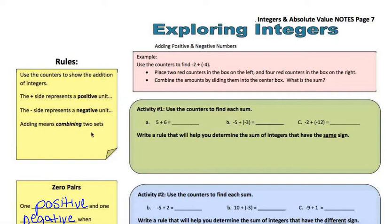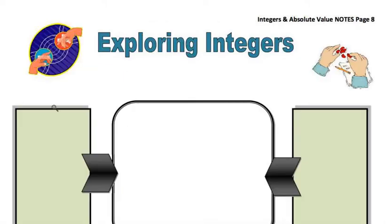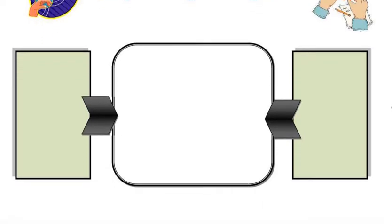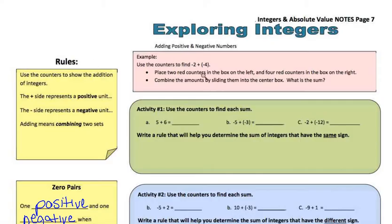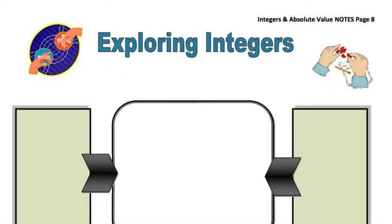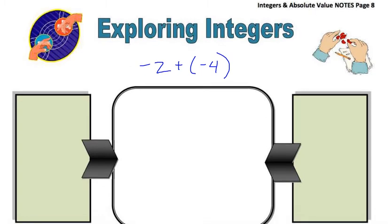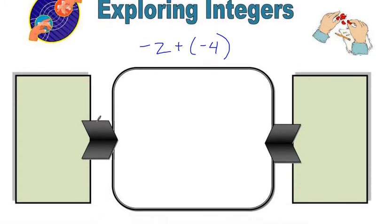When we're adding, we're combining two different sets. So the example says use the counters to find negative 2 plus negative 4. I'm going to use this little mat — if you want to draw this mat on your desk you can do that. The problem we're solving is negative 2 plus negative 4, written as negative 2 plus parentheses negative 4. The reason the negative 4 is in parentheses is so the negative doesn't get stuck with the addition sign. I recommend you draw it on your desk or on a whiteboard.